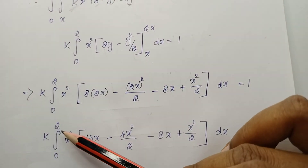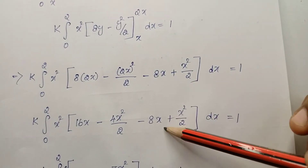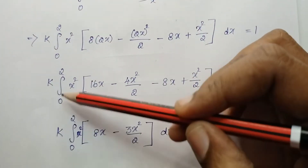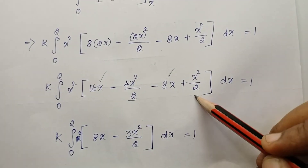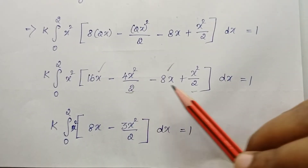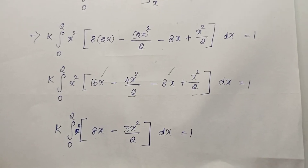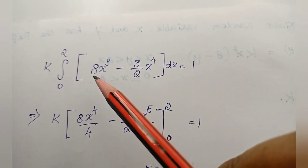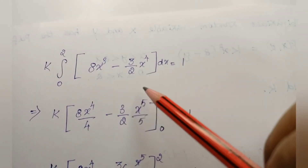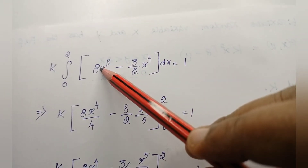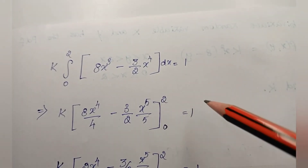Simplifying: k times the integral from 0 to 2 of x squared times (16x minus 4x²/2 minus 8x plus x²/2) dx equals 1. Combining like terms: (16x minus 8x) gives 8x, and (minus 4x² plus x²) gives minus 3x²/2. So we have k times the integral from 0 to 2 of x squared times (8x minus 3x²/2) dx equals 1.